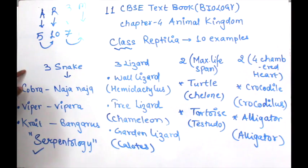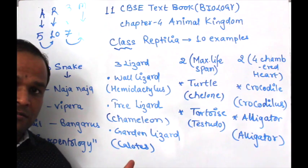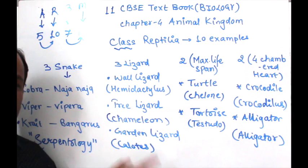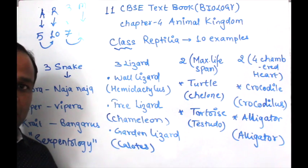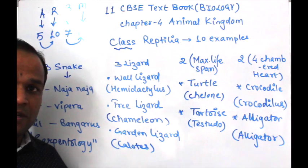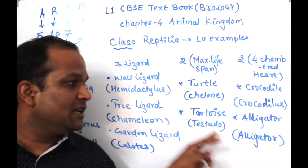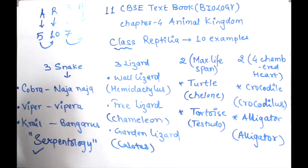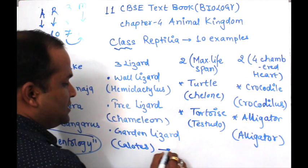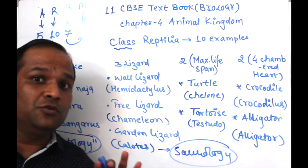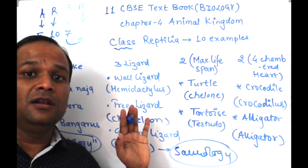To recap: 3 snakes — Cobra (Naja naja), Viper (Vipera), Krait (Bangarus); 3 lizards — Wall lizard (Hemidactylus), Chameleon, Garden lizard (Calotes); 2 with maximum life span — Turtle (Chelone), Tortoise (Testudo); 2 with 4-chambered heart — Crocodile, Alligator. The study of lizards is known as Saurology — hence dinosaurs, which are big lizards, also fall under this.